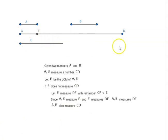So A and B measure CD, A and B measure DF. That is a contradiction.